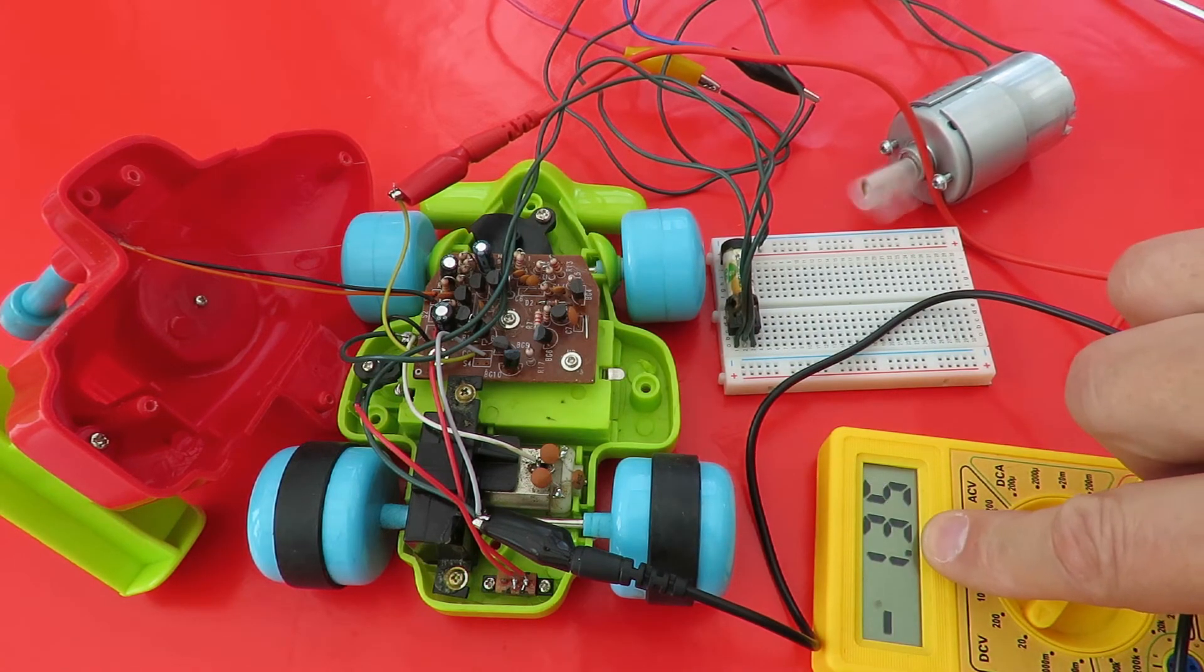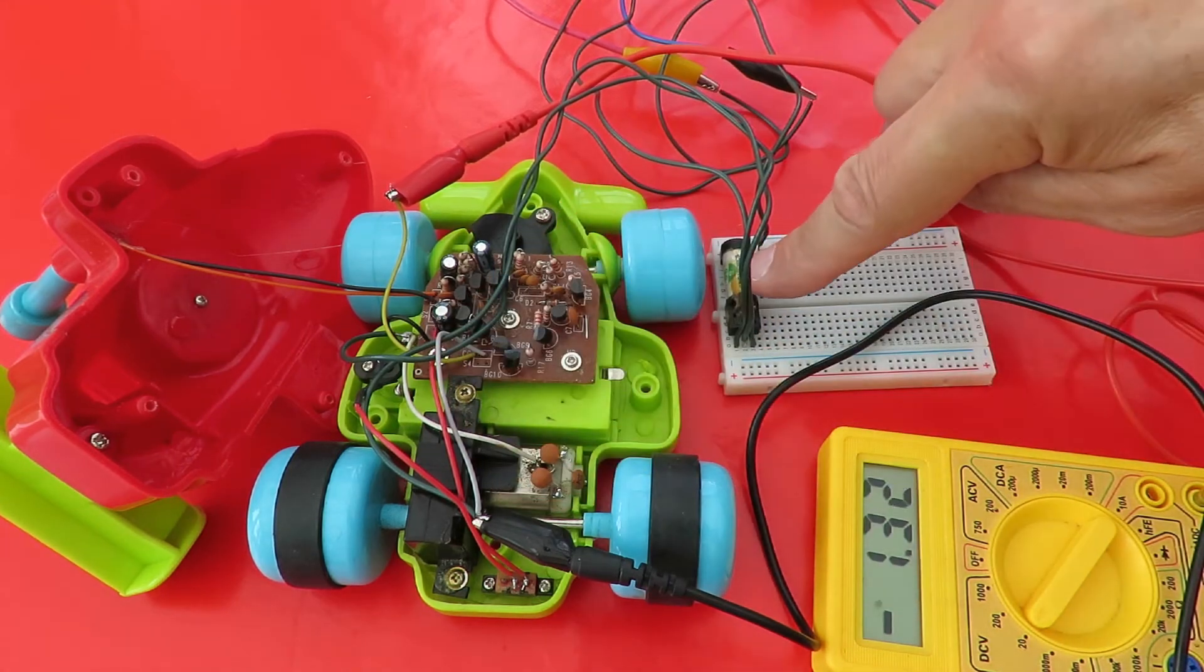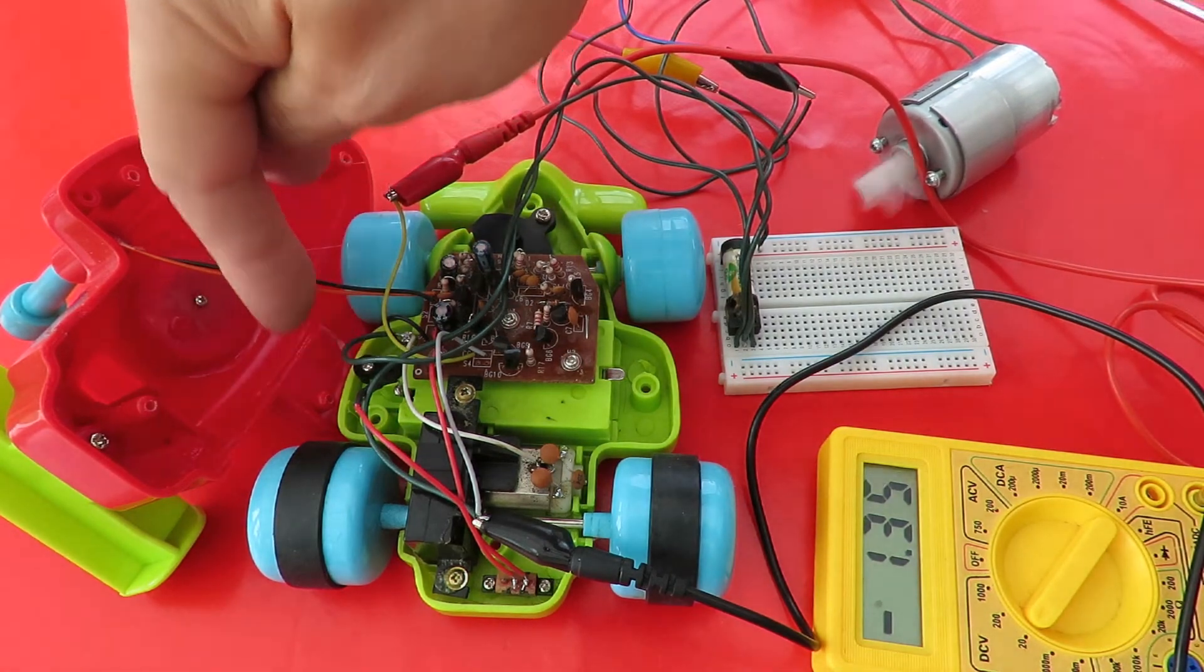So that's dropped to 1.3 volts. The current is now flowing out of the grey wire through my relay to the negative terminal of the battery direct.